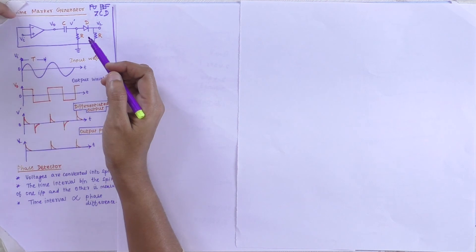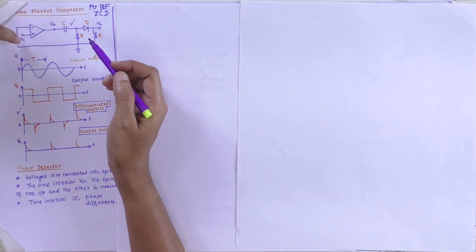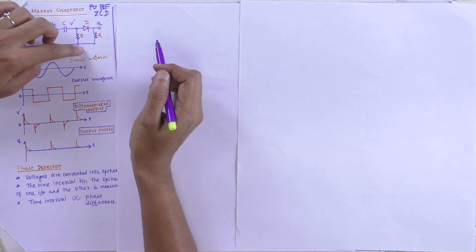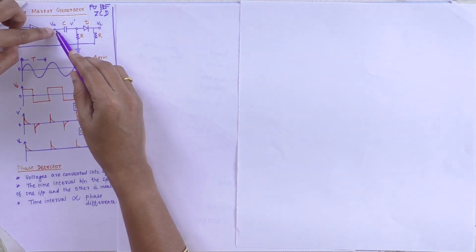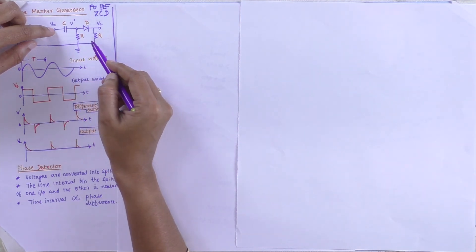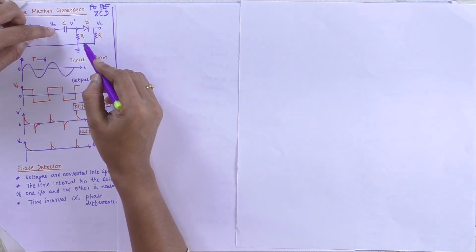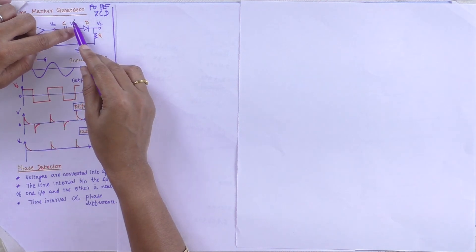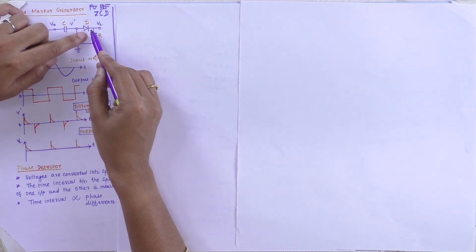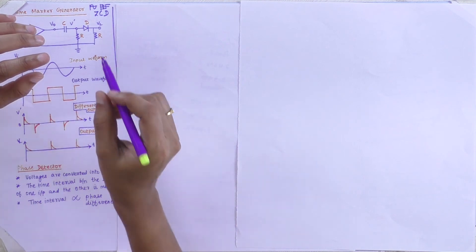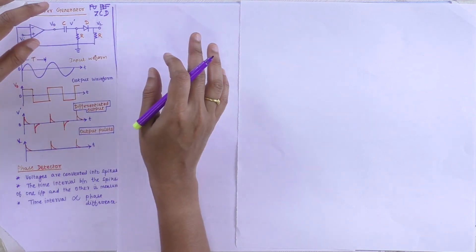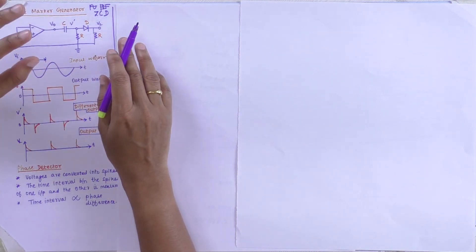This is the concept of the time marker generator. The input voltage is applied and the reference voltage is made 0. It is like a voltage follower circuit. From this output, a capacitor and resistor circuit is used. The differentiator concept is implemented, giving output V dash. This output V dash is then passed through a diode.